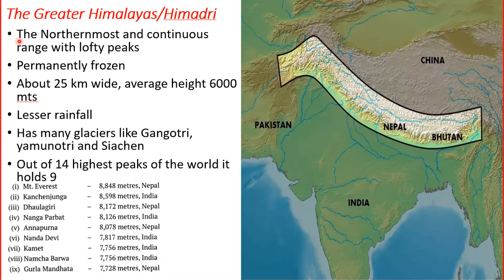The Himadri is the northernmost and continuous range with lofty peaks. It has glaciers which serve as the source of many perennial rivers of India like the Ganga, Yamuna, and Indus. They are permanently frozen, about 25 kilometers wide, with an average height of 6000 meters. Due to very low temperature, this region receives very little rainfall. The ranges have many glaciers like Gangotri, Yamunotri, and Siachen. Out of the 14 highest peaks of the world, Himadri holds nine.